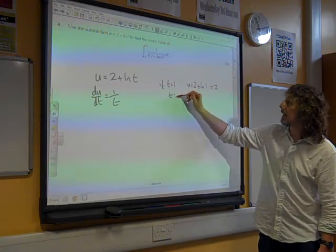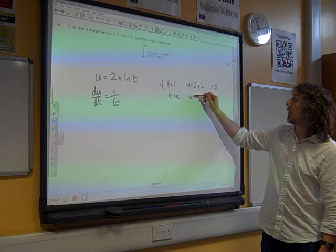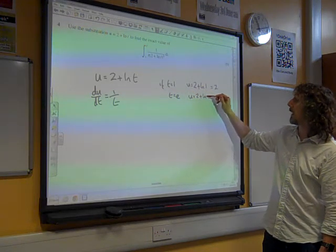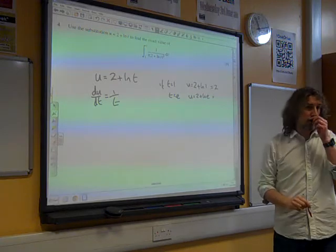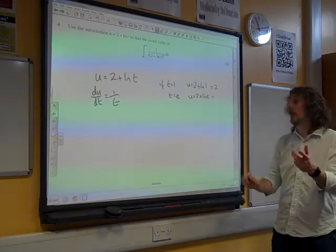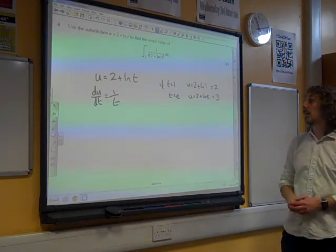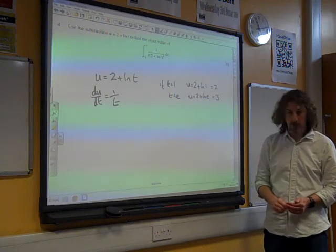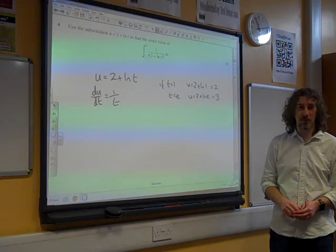If t equals e, then u is 2 + natural log of e, and the natural log of e is 1, so that's 2 + 1, so that's 3. So our limits are going to change, we're going to have 2 and 3.